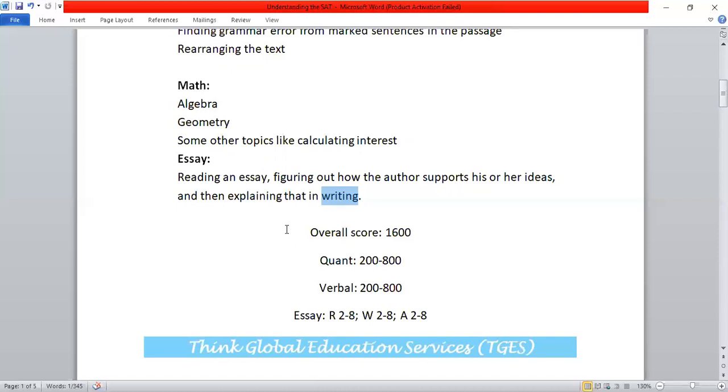Then if you look at the last part where I have written the word essay, and then I said R 2-8, W 2-8, and A 2-8. If you're not able to understand what this means, let me clear this out to you. R means reading, W means writing, and A means analysis. Your essay is scored in three different parts. You get a score 2 to 8 in the reading section, 2 to 8 in the writing section, and 2 to 8 in the analysis section. You're basically scored by two different people. So your essay goes to two different people. One person will score it out of 1 to 4, the other will also score it out of 1 to 4.